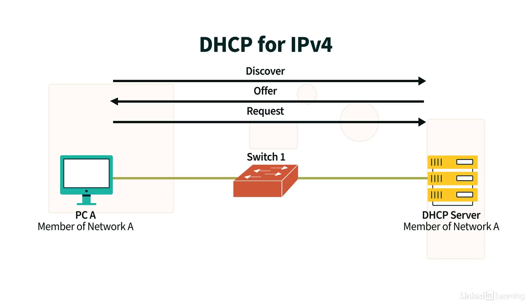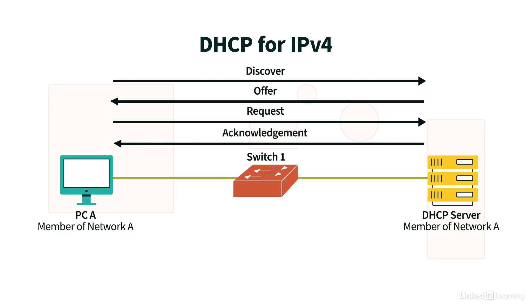PCA is going to send out a Request message — that's the R in Dora — asking the DHCP server for IPv4 address information. Finally, the DHCP server responds to that Request message with an Acknowledgement, which is the A in Dora. The Acknowledgement message provides PCA with its IP address, subnet mask, default gateway, and maybe other parameters such as the address of a DNS server.